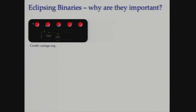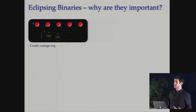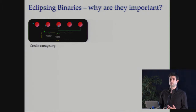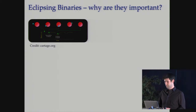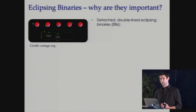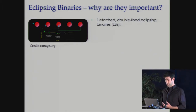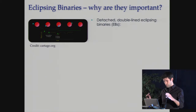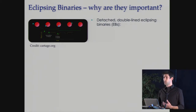Briefly, eclipsing binaries are standard binary stars, notable only because of their orientation — we see one star pass periodically in front of the other, giving drops in the amount of light observed. I'm going to focus on a system that is detached and double-lined, meaning the two stars are well-separated, interacting only via stellar winds and potentially large-scale magnetic fields.